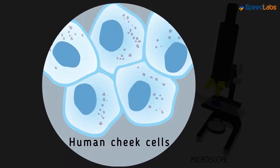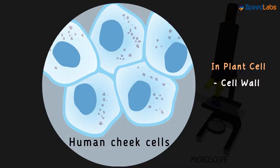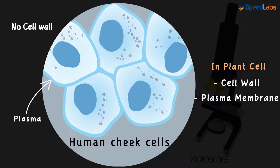Do you remember there are two distinct boundaries around the cell? Yes — the cell wall and the plasma membrane. Notice that we do not have the cell wall around the plasma membrane in the animal cell.